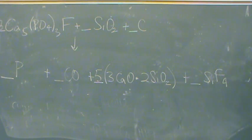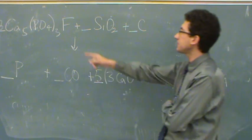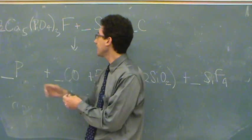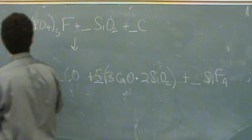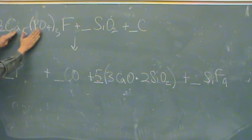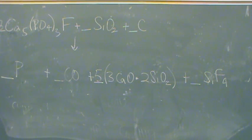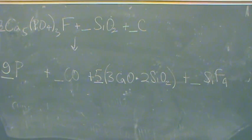Phosphorus, I think, only appears here and here. How many phosphorus are up here? Nine — three times three. Okay, got phosphorus down.